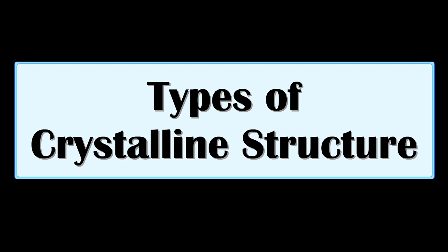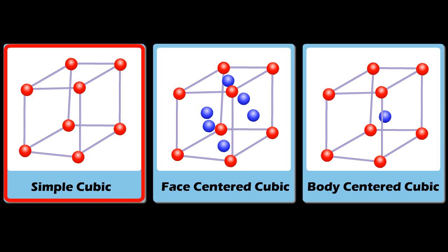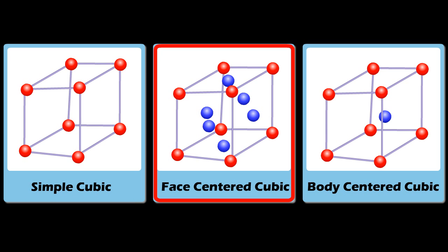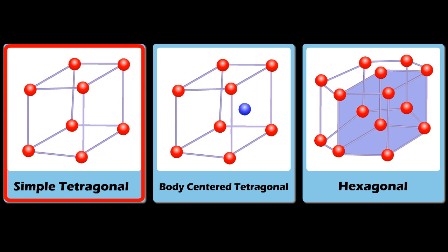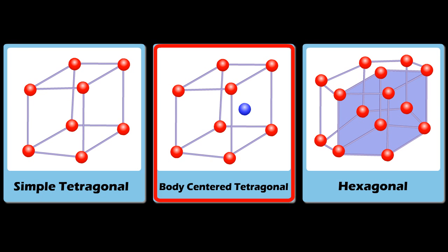Types of crystalline structures are simple cubic, face-centered cubic, body-centered cubic, simple tetragonal, and body-centered tetragonal.